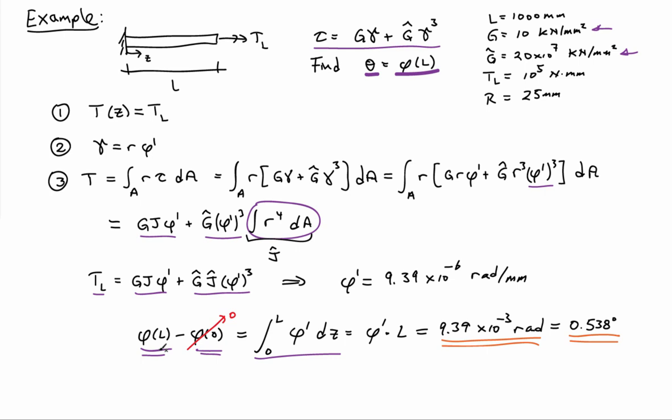And in this case, phi prime is a constant as a function of Z. So this integral is just phi prime times L. And I can plug in the values up there that I have, namely that L is equal to 1,000 millimeters.